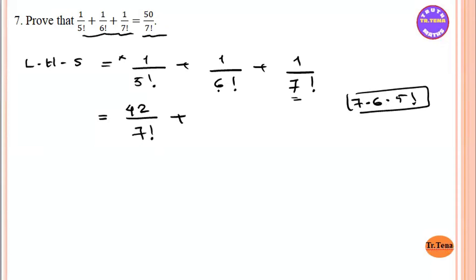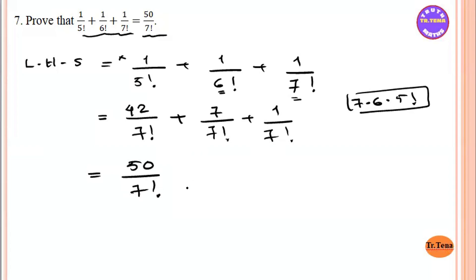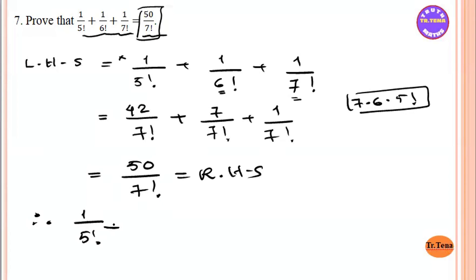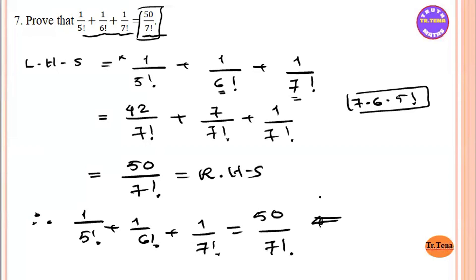So you can choose 7. If you are not sure how to work, you will be able to do it. So if we look at the same thing, equal to right and sum. Therefore, we will look at the same thing. 1/5 f2 plus 1/6 f2 plus 1/7 f2 equal to 50 by 7 f2. We will look at the same thing.